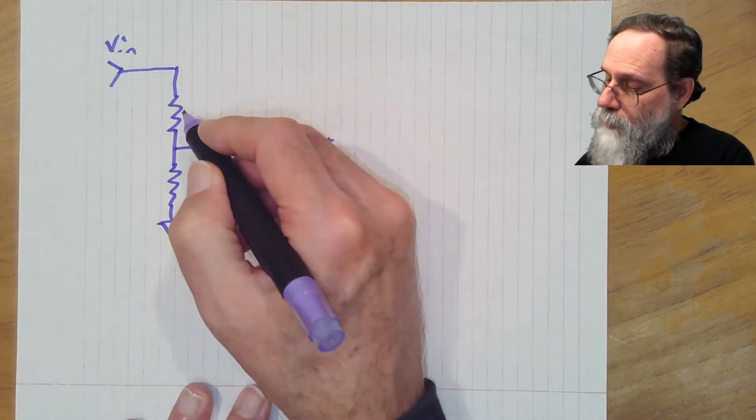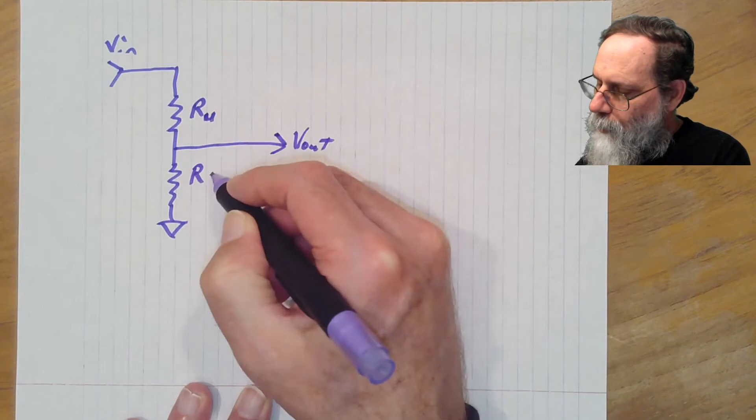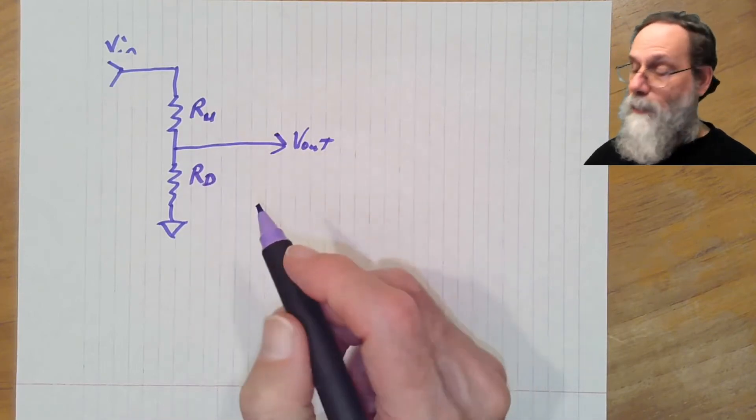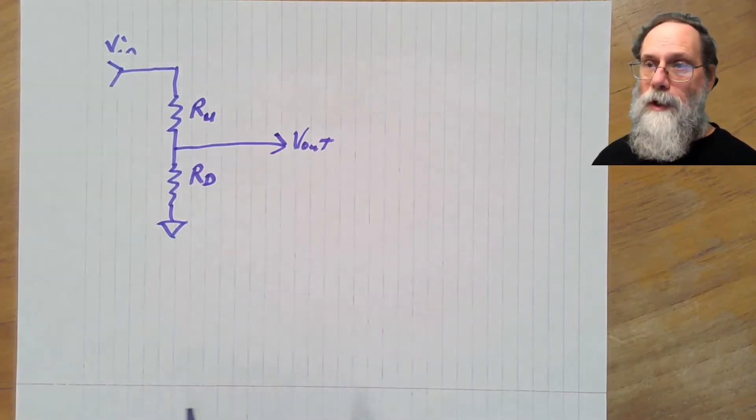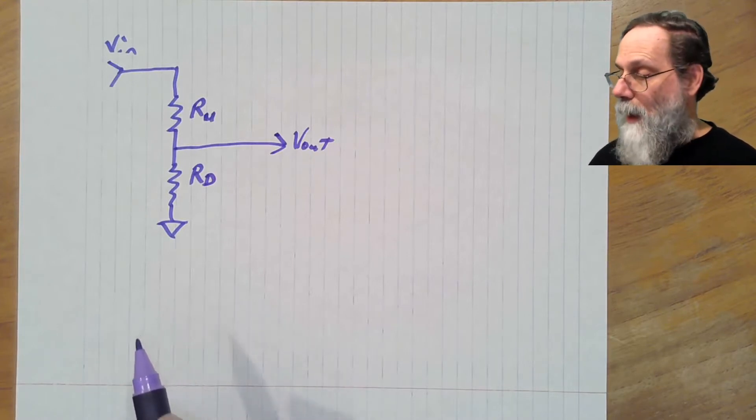Now we've got two resistors here. Let's call them Ru and Rd for up and down, just so that we can remember which one's which. The trouble with using numeric designators is it's often very difficult to remember which way you numbered things.